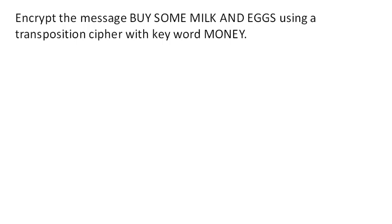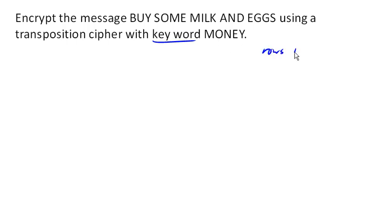One way to make a transposition cipher more complicated is instead of just reading down the columns, we can pick the columns in a different order. One neat way to do that is using a keyword. In this case, we're going to use the keyword 'money.' That keyword tells us two things: first, it tells us that we are going to do rows with five characters, because there are five characters in the word 'money.' Second, it tells us the order in which to read the characters.